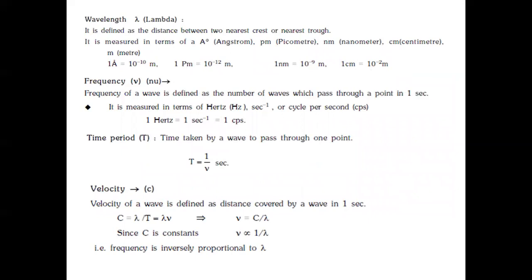Characteristic properties of electromagnetic radiation include wavelength, frequency, velocity, amplitude, and wave number. Wavelength, represented by λ, is the distance between two nearest neighboring crests or troughs, expressed in nanometers or angstroms. Frequency, represented by ν, is the number of waves passing through a particular point in one second; its SI unit is hertz, also known as one cycle per second.